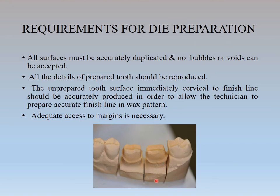Requirements of die preparation: all surfaces must be accurately duplicated and no bubbles or voids should be accepted — you have to apply proper pouring techniques. All details of the prepared tooth should be reproduced. The unprepared tooth surface immediately cervical to the finish line should be accurately produced in order to allow technicians to prepare accurate finish lines in wax patterns. A lab technician can see the finish line properly, and accurate access to margins is necessary — everything should look clear and visible.